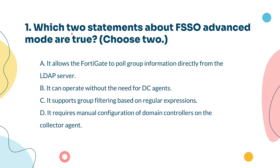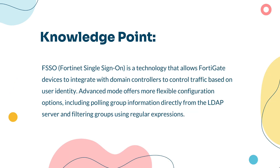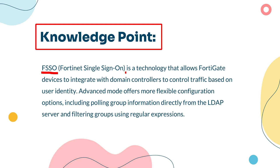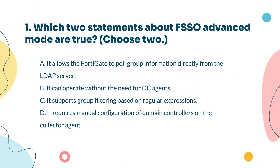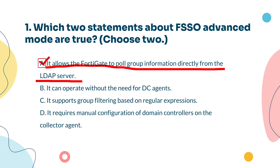Question 1: Which two statements about FSSO Advanced Mode are true? FSSO helps FortiGate control access based on user identity. In advanced mode, it can directly pull group info from an LDAP server, bypassing the need for a DC agent. You can also use regular expressions to filter groups for better control. FortiGate can directly pull group information from the LDAP server without relying on the DC agent — therefore, Option A is correct. Option C is also correct.